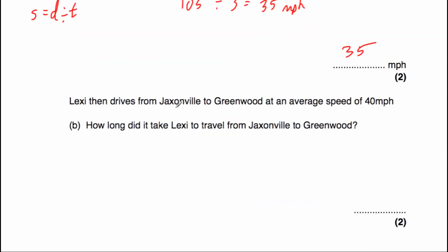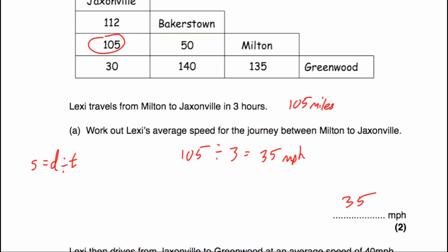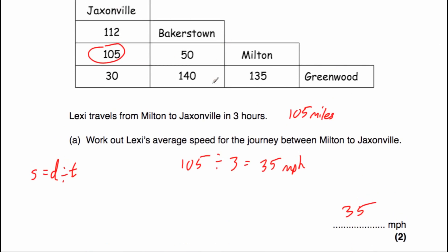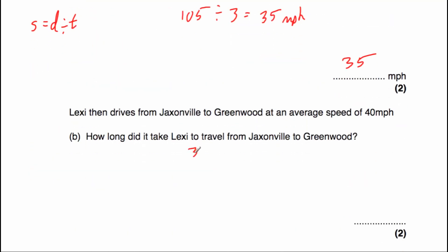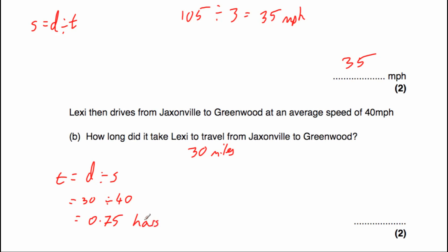Part B says Lexi then drives from Jacksonville to Greenwood — that would be 30 miles. Her average speed is 40 miles per hour, and the question asks how long did it take Lexi. Time equals distance divided by speed. So 30 miles divided by 40 miles per hour equals 0.75 hours. Remember 0.75 is three quarters, so it takes her three quarters of an hour, or 45 minutes. The answer would be 45 minutes.